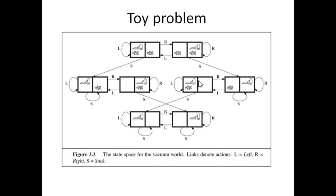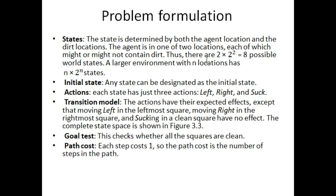You can see here the right action applied on this state, then the left action, and the suck action which represents the cleaning action. There are eight different states in total. The total number of possible world states is 2 multiplied by 2 raised to the power 2, which equals 8. The general formula is n multiplied by 2 raised to the power n, where n is the number of locations.